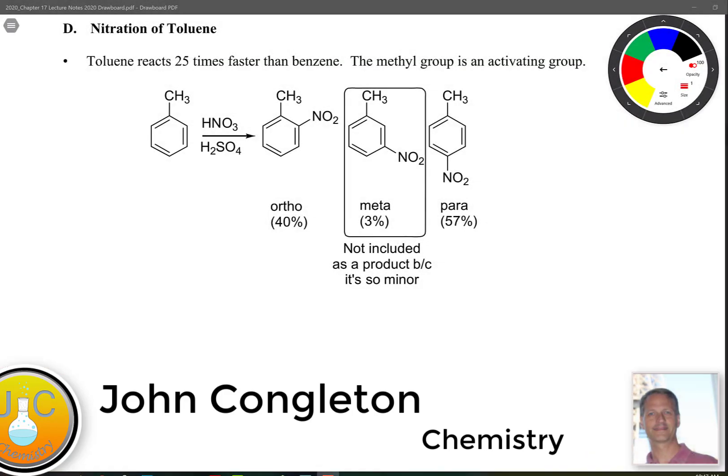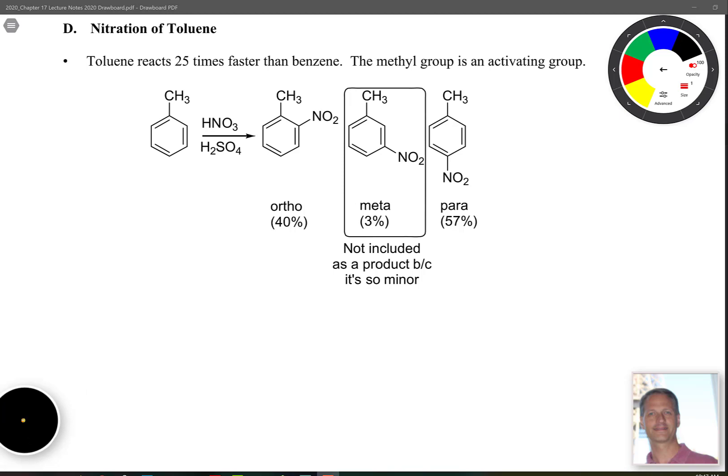Let's talk about the nitration of toluene. Often when we see these EAS type reactions, we look at benzene with substituents on it. Toluene has an alkyl group, a methyl group, and the presence of that methyl group causes toluene to react 25 times faster than benzene by itself.